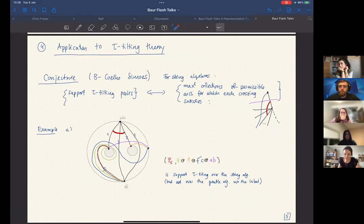So in the setup for string algebras, we expect that support tau tilting pairs correspond to maximal collections of permissible arcs, for which we can have crossings. That's already in the surface gentle case.